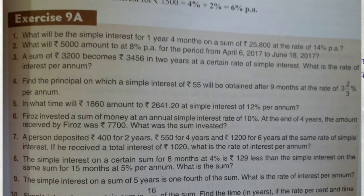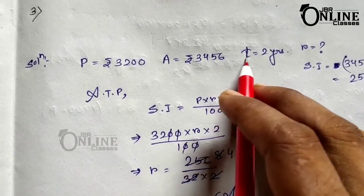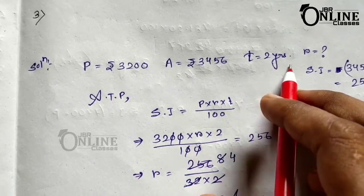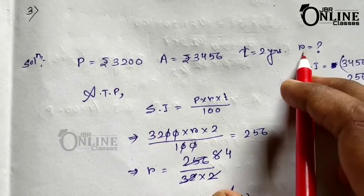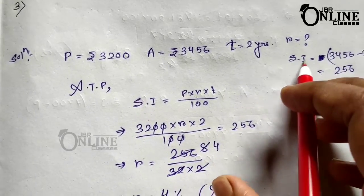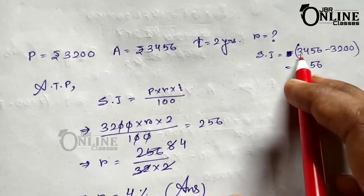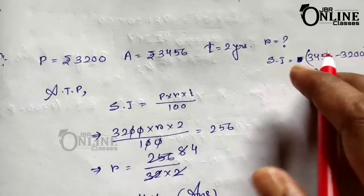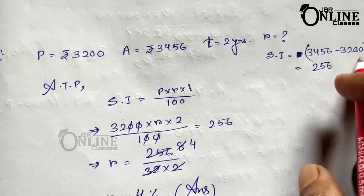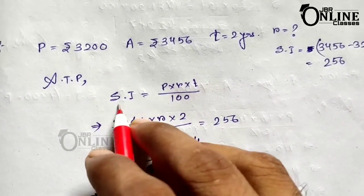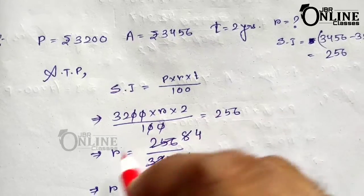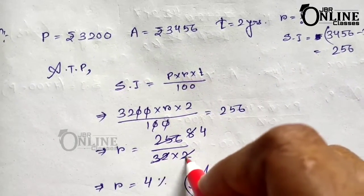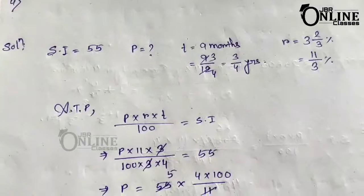Sum number 3: A sum of 3200 becomes 3456 in 2 years at a certain rate of simple interest. Find the rate per annum. Simple interest equals amount minus principal: 3456 minus 3200 equals 256. According to SI equals PRT by 100: 3200 into R into 2 by 100 equals 256. So R equals 256 divided by 32 into 2, which equals 4. Rate of interest equals 4%.